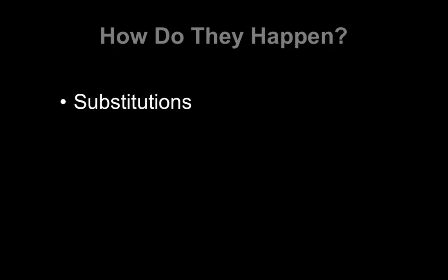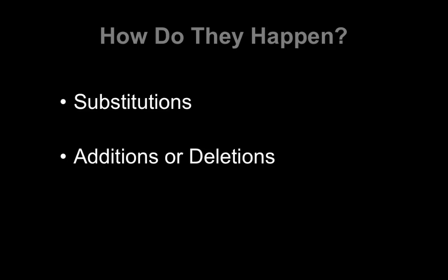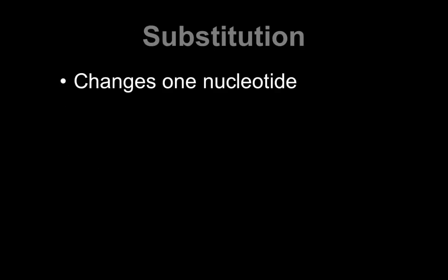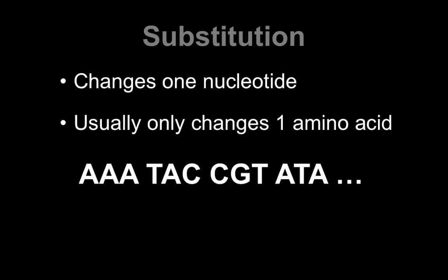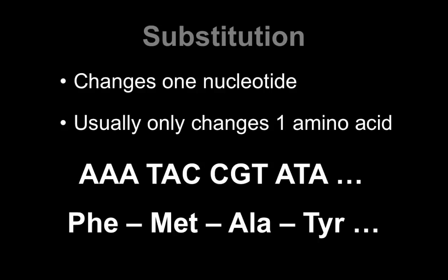Mutations can happen in a couple of different ways. We can have substitutions, and we can have additions or deletions. With substitutions, you only change one nucleotide — in other words, one letter. And because you're only changing that one letter, it usually only changes one amino acid. So if we change this A to a C, instead of this protein, we're going to get this protein — it only changes that one amino acid.